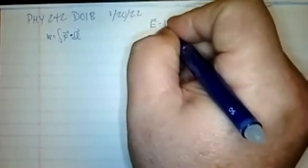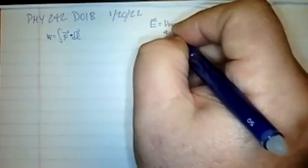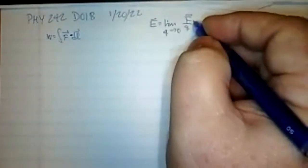We think of work as force times distance. What work really is: W = ∫F·dL — a line integral. Since we defined the electric field as the limit as Q approaches zero of force divided by Q, the force is just Q times E. So work equals the integral of QE·dL.